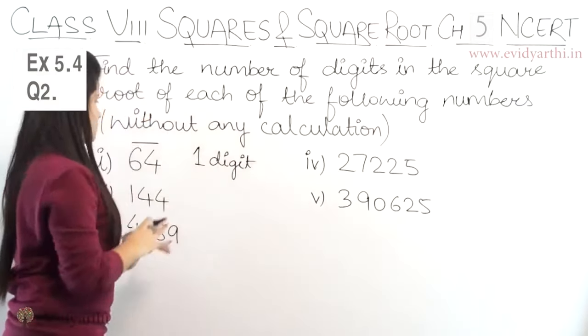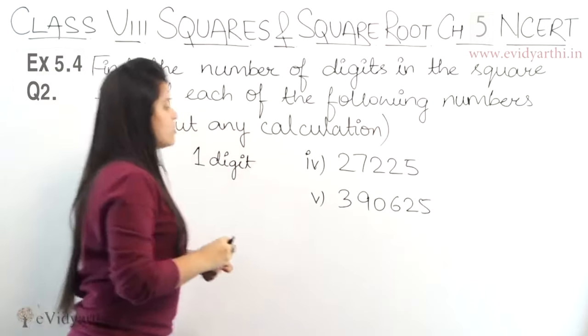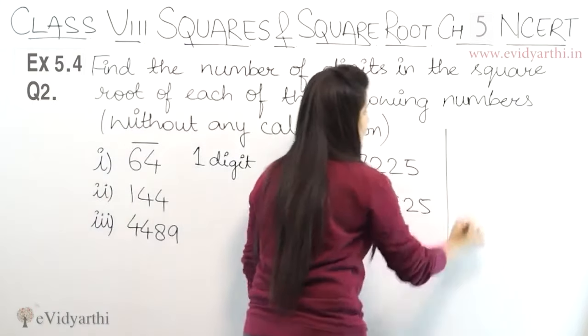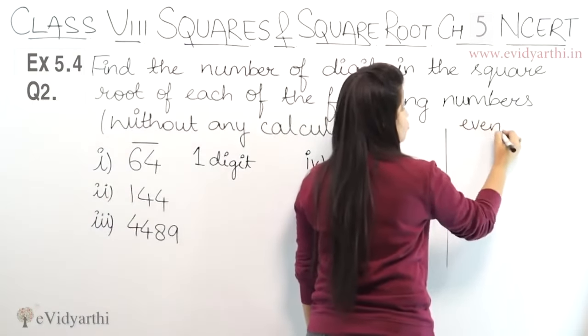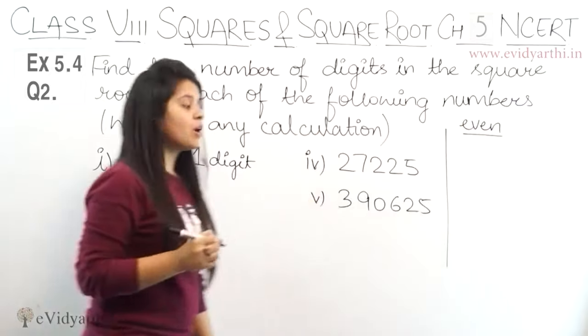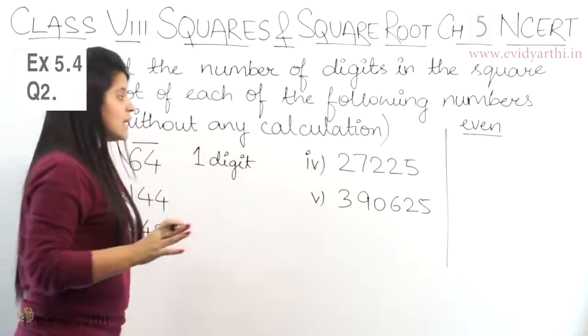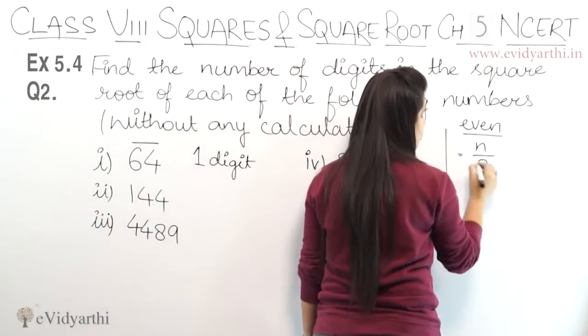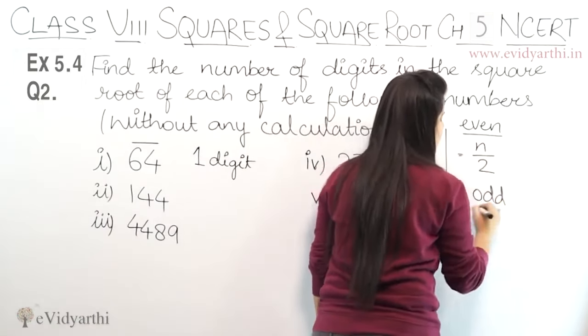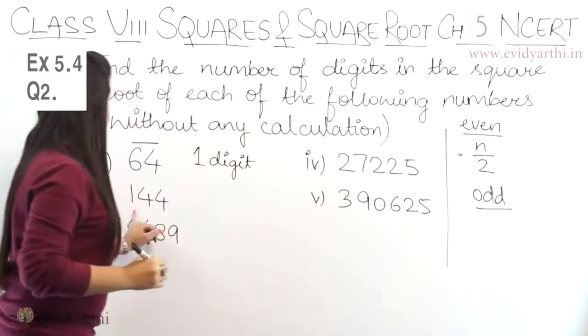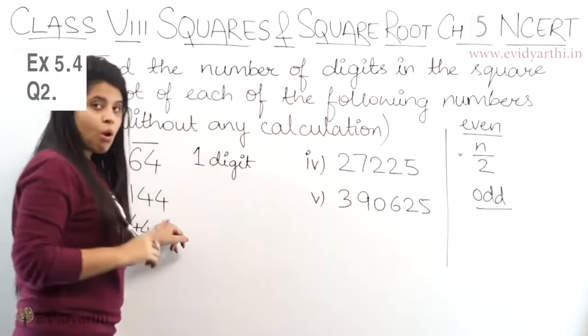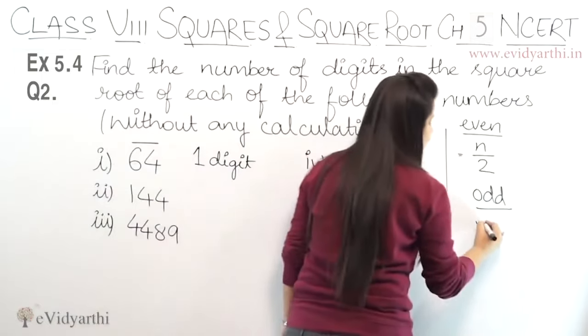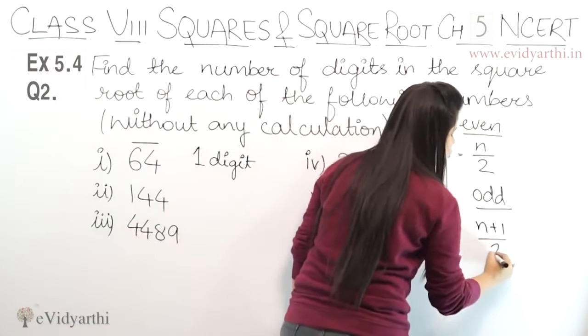This is a simple way, one way is, what happens if you have square given. It will be even number of digits, like 1, 2. So 2 is an even number, so if it is even, then n upon 2. So if it is odd, like digits 1, 2, 3, then 3 is an odd number, so n plus 1 upon 2.